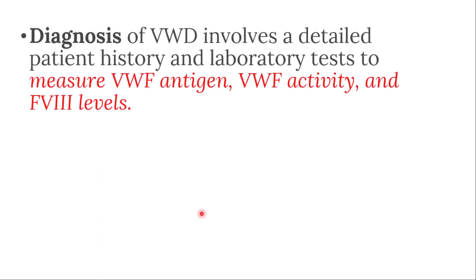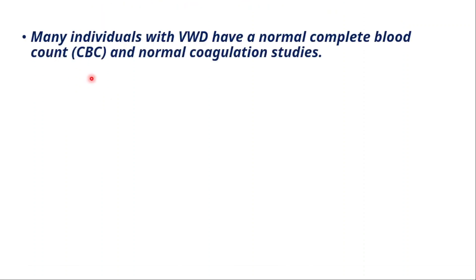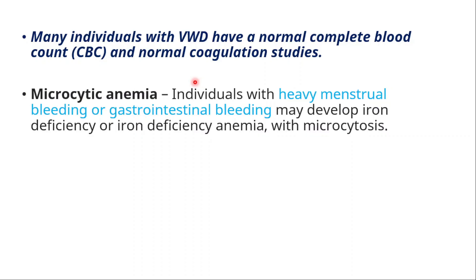For diagnosis, patient history is very important and we use laboratory tests to measure the antigen of von Willebrand factor, activity, and factor VIII levels. Many individuals will have a normal complete blood count and normal coagulation studies, but some may show microcytic anemia. Individuals with heavy menstrual bleeding or gastrointestinal bleeding may develop iron deficiency anemia or iron deficiency with microcytosis.